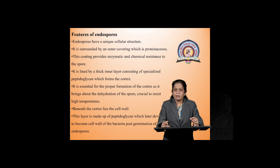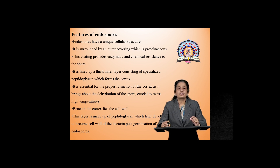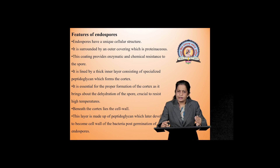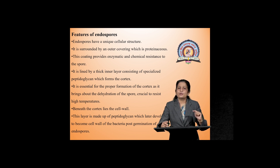This coating provides enzymatic and chemical resistance; therefore normal enzymes and chemicals cannot enter inside the spores. These spores are lined by a thick inner layer consisting of specialized peptidoglycan, which is normally present in the cell wall, and it forms the cortex — which is part of the endospore. Peptidoglycan is essential for proper formation of the cortex and brings about dehydration of the spore. Water is removed, and this is important because only in a dehydrated condition can spores tolerate high temperature.